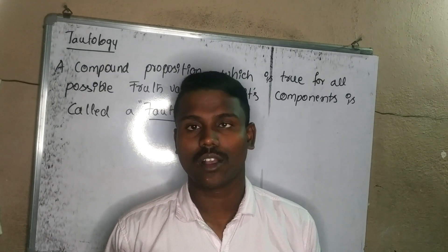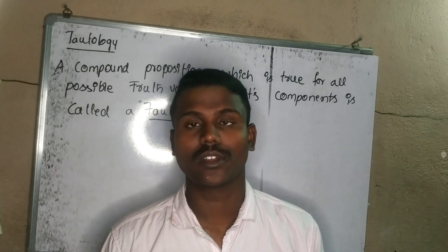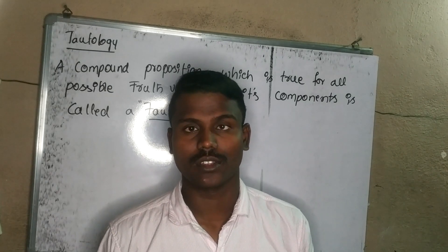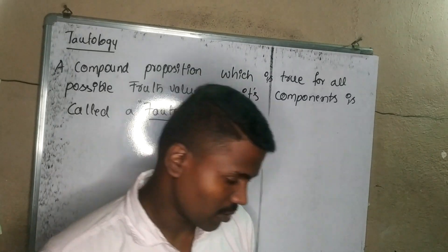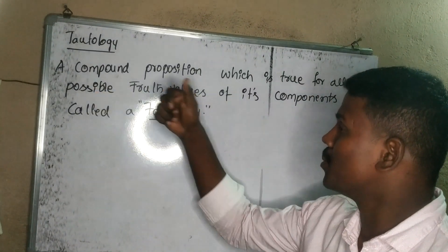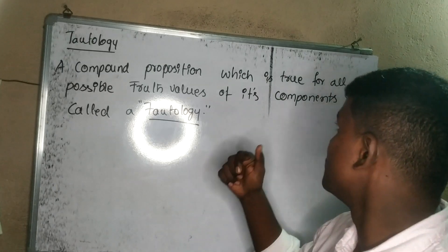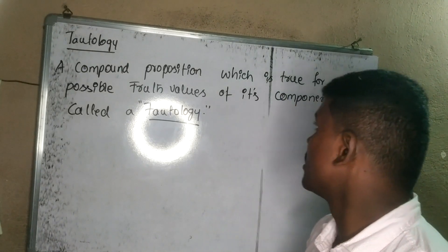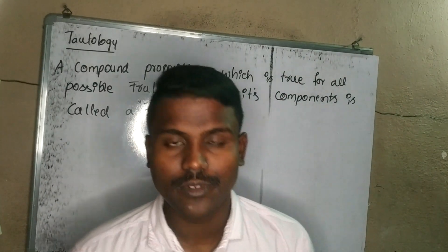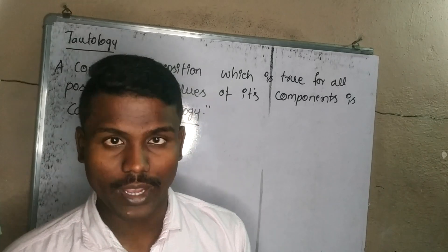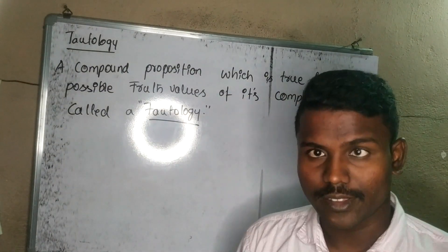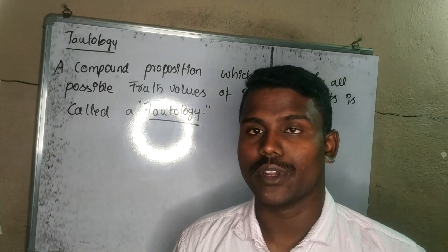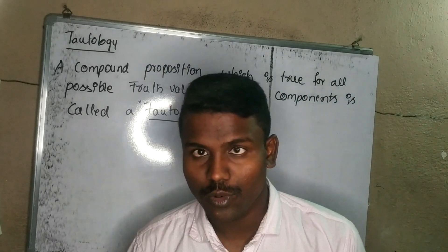The question is to define tautology. Tautology is a compound proposition — a combination of propositions which is true for all possible truth values of its components. All possible truth values being true of its components is called tautology.